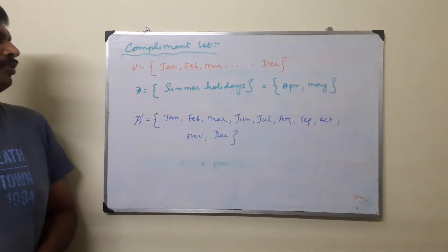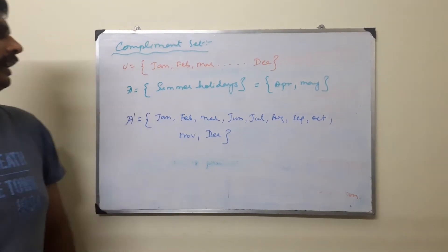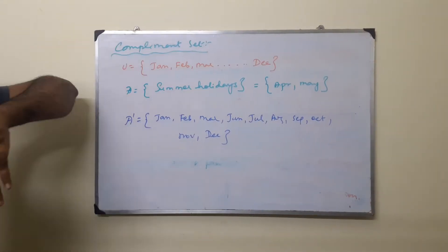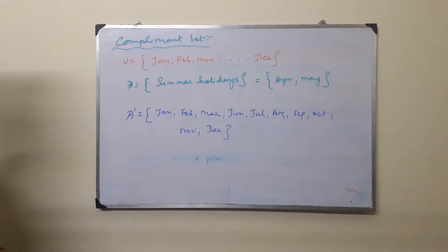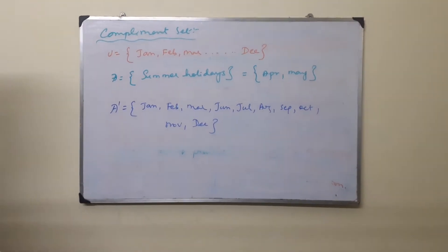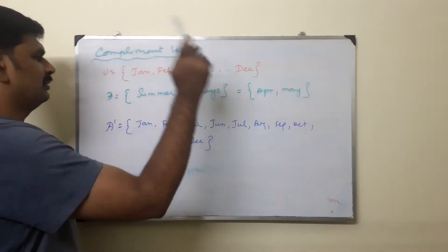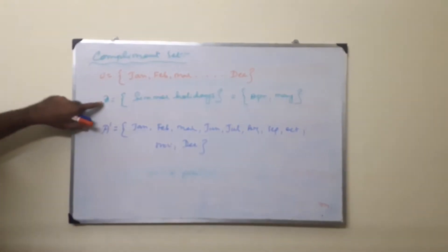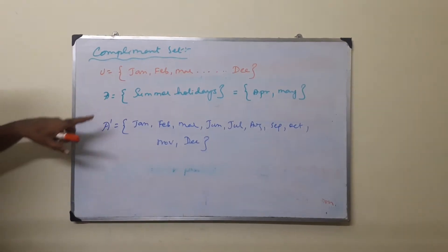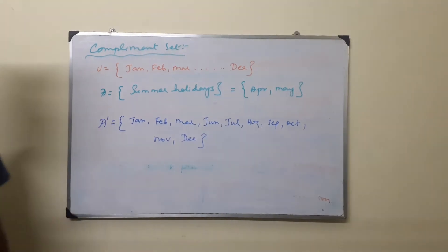Next, we have to move to the next type from the types of sets. The type name is complement set. We have already completed universal set. It is related to universal set.